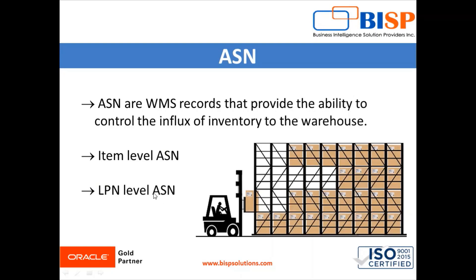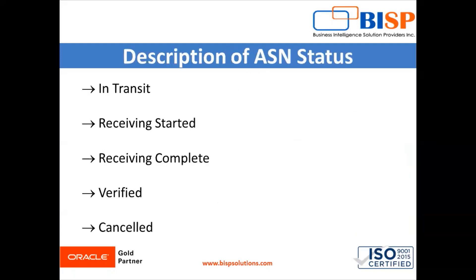LPN-level ASN — LPN is License Plate Number — gives us information about the supplier palletize, and they are sending the whole structure of the ASN with LPN, SKU, and quantities. Every ASN record has an associated inbound load number. Inbound loads are required to receive an ASN, that is, Advanced Shipment Notice.